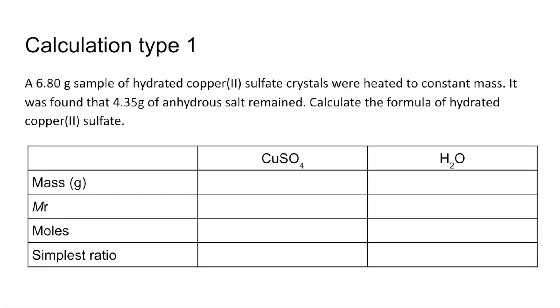The first type of calculation is a bit like an empirical formula calculation. We've got the mass of the hydrated copper(II) sulfate crystals, heated to constant mass, and we're told that 4.35 grams of anhydrous salt remained. So the mass of water is obviously the difference between the two masses, 2.45.